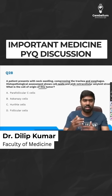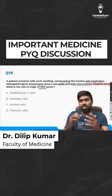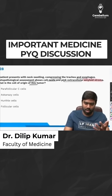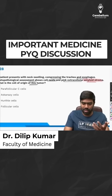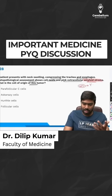What is the cell of origin of this tumor? Amyloid stroma is clearly mentioned — when it comes to thyroid cancer and amyloid stroma, you have to always think about medullary thyroid cancer, because MTC is a cancer of parafollicular C cells of the thyroid gland.